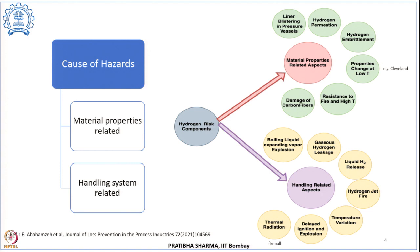Let us look at the different risk components related to hydrogen hazards at different hydrogen facilities and applications. The first and foremost material-related hazard is hydrogen embrittlement — the change in the mechanical properties of metals or non-metals when these are exposed to hydrogen. The material becomes brittle, changing its characteristics from ductile to brittle.